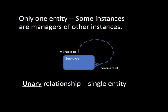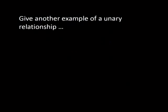In table terms, a unary relationship is represented as one table with a foreign key referencing itself — a manager ID field inside the employee table. If an employee has a manager, you put the manager's employee ID in that row. It's technically a foreign key in the same table. Now that we've seen a unary relationship, after a five-minute break you'll give me another example of one.